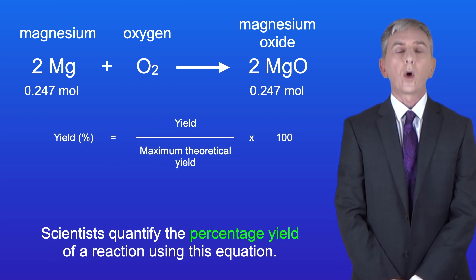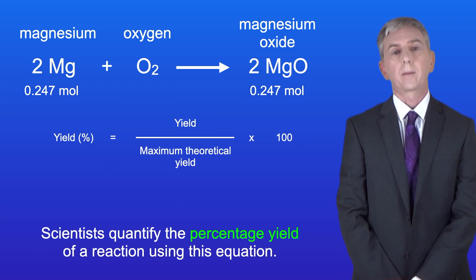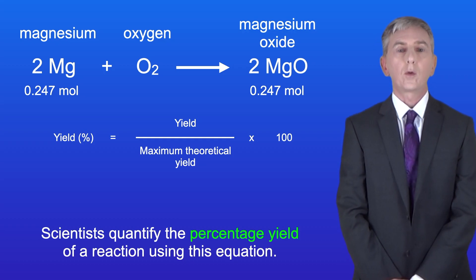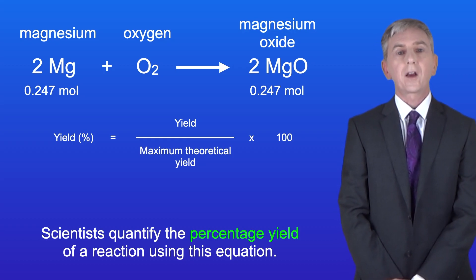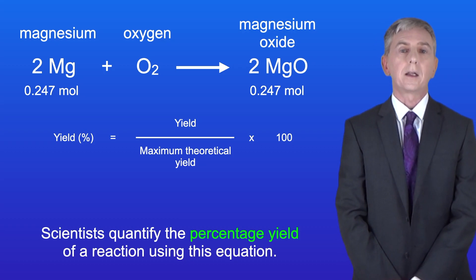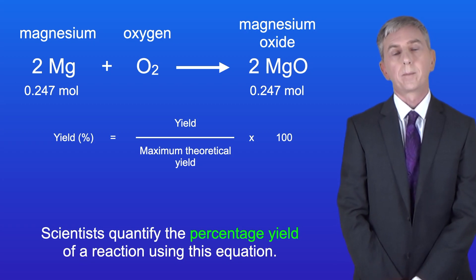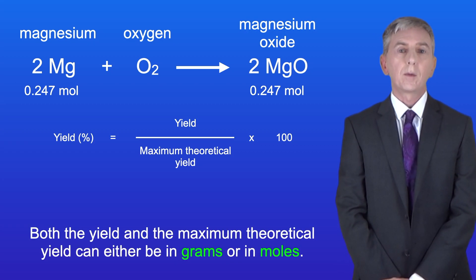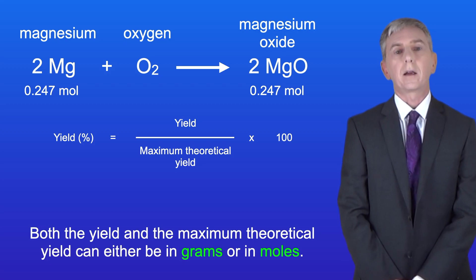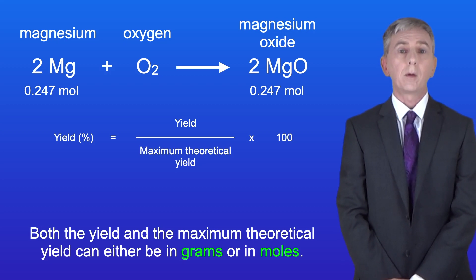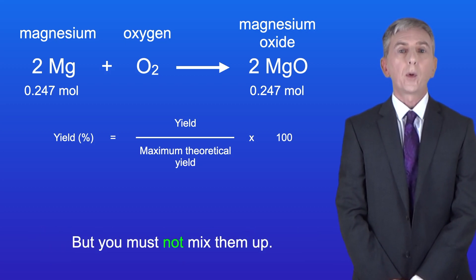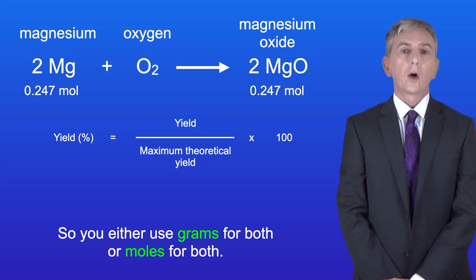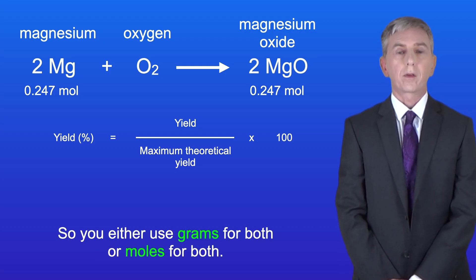Scientists quantify the percentage yield of a reaction using this equation: the percentage yield equals the yield divided by the maximum theoretical yield multiplied by 100. Both the yield and the maximum theoretical yield can either be in grams or in moles, but you mustn't mix them up — you either use grams for both or moles for both.